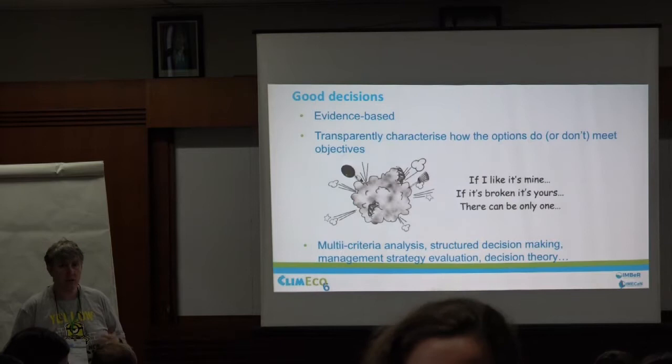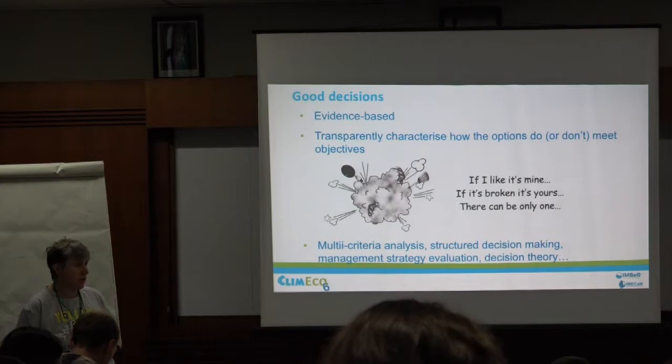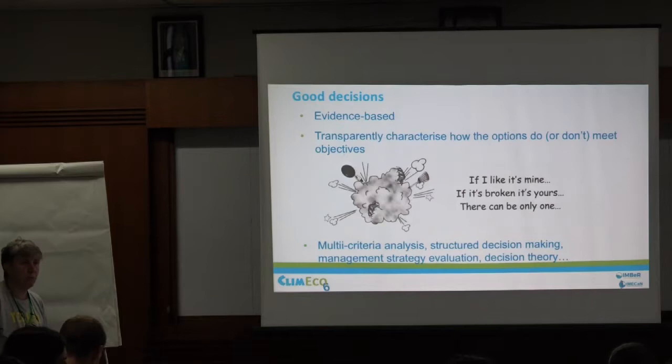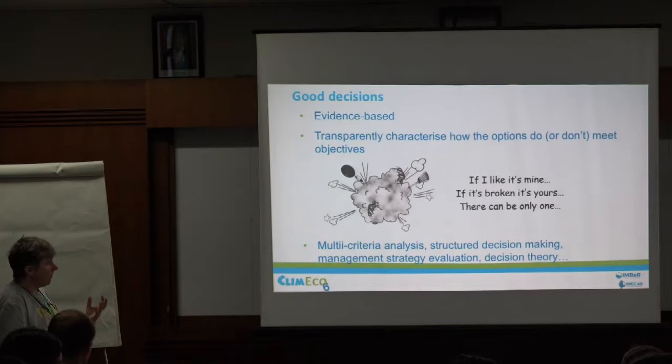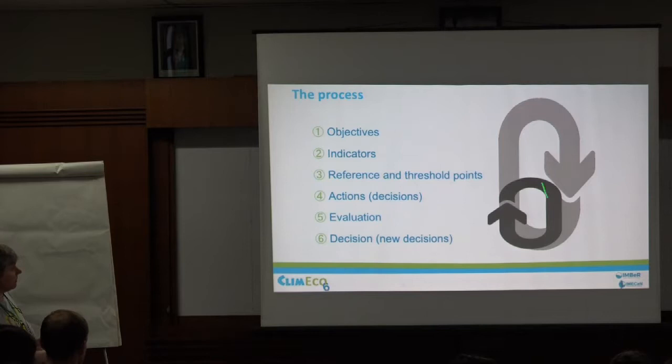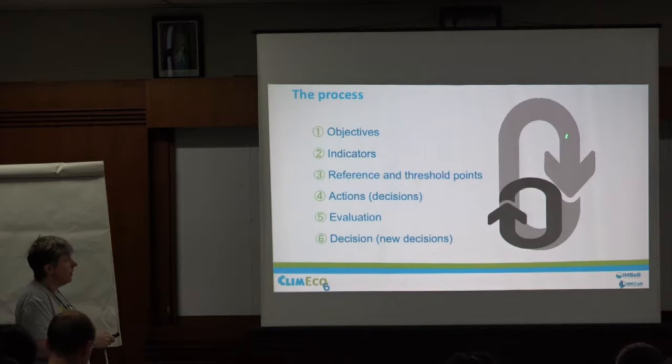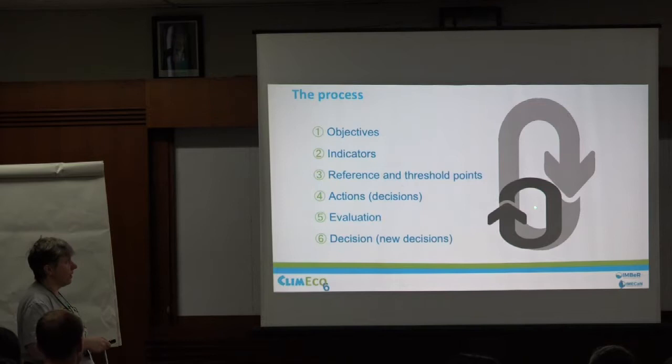There are lots of different ways of doing that: multi-criteria analysis, structured decision-making, and things that come out of structured decision-making like management strategy evaluation, where you use models to test the indicators — like we heard this morning with the marine trophic index. All of those require indicators that you can link to performance measures. These work in the adaptive management cycle where you have higher-order objectives, decide what to do in management, implement that management, see if it's doing what you expected, and in the longer double loop update future objectives.